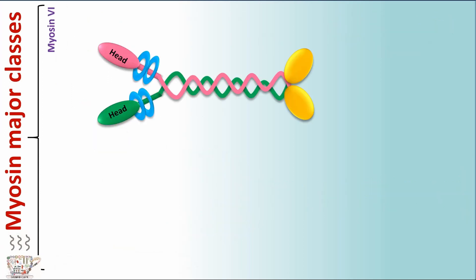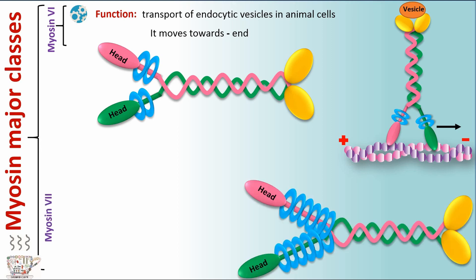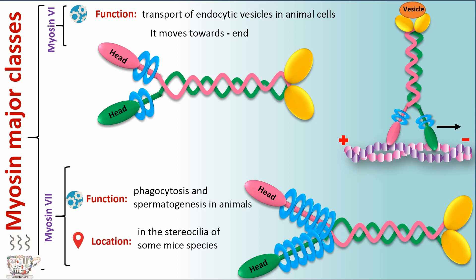Myosin 6 plays a role in transport of endocytic vesicles in animal cells and moves towards minus end. Myosin 7 plays a role in phagocytosis and spermatogenesis in animals.